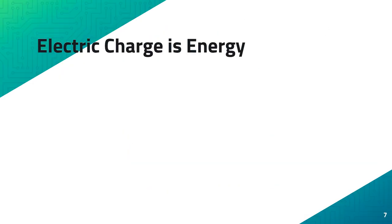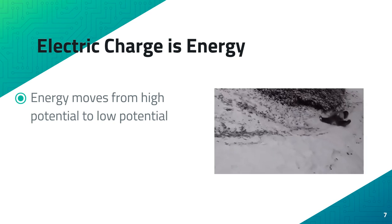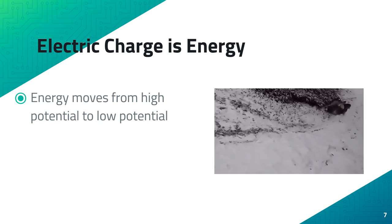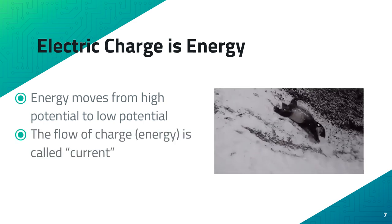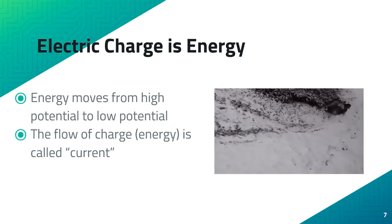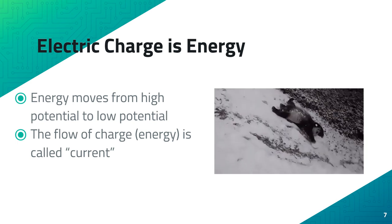Electric charge is energy, and that energy moves from high potential to low potential — just like a panda sledding down a hill, moving from where energy is high at the top to where it's low at the bottom. The flow of charge, or current, does the same thing: it moves from an area of high energy to an area of low energy.